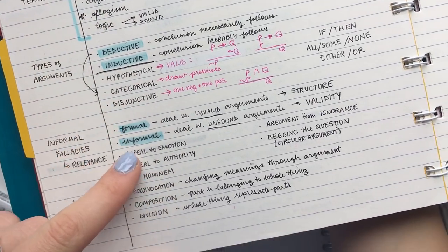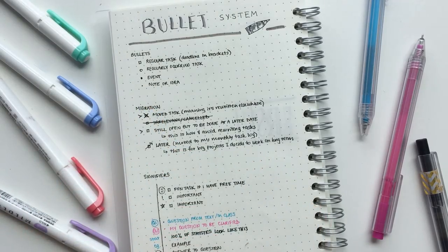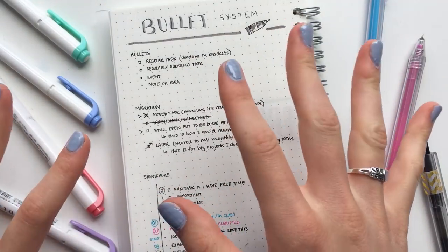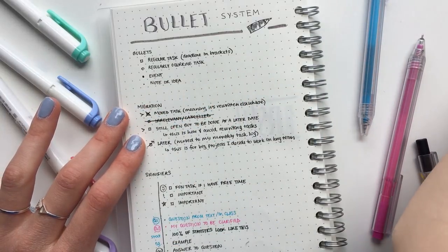So in my notes for school, I use the same method. Then for migration, migration basically means if I've completed a task or if I'm moving a task, how I deal with that in my bullet journal. So if I completed a task, I fill in the bubble, of course.